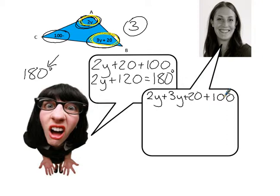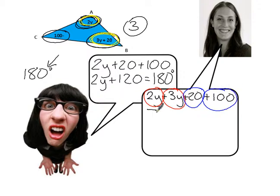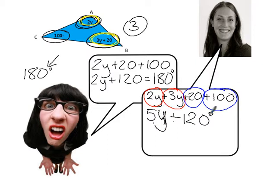Now, Gertrude, next step — we need to simplify. We need to group the like terms. So I've got 2y here, I've got 3y here, and we've got plus 20 here and we've got plus 100 here. So if we group the like terms, we end up with 5y altogether and we have 120 degrees.